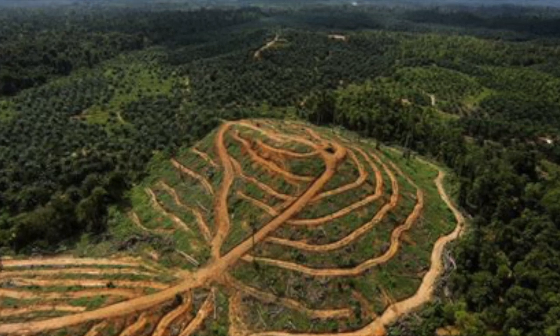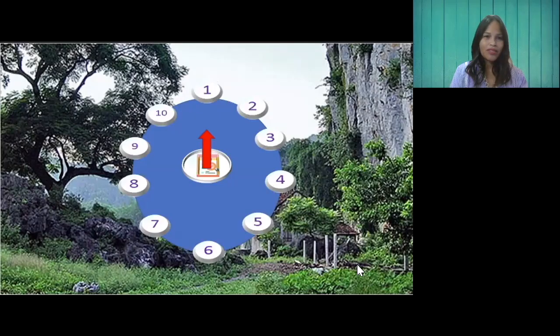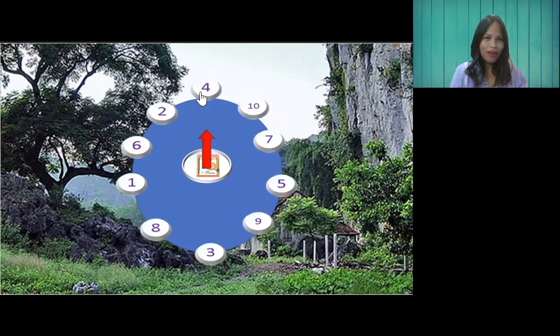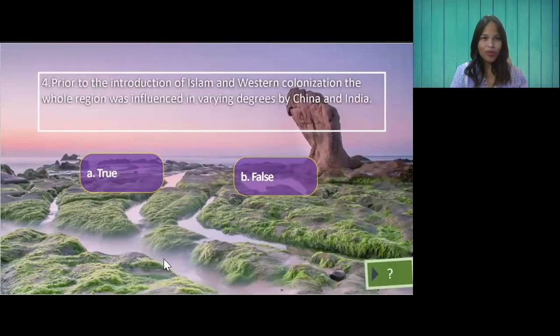All right, time for another quiz. I have prepared ten questions for this quiz, but since you have been such a great audience, I will reduce it to only five to make it easier for you. Let's start! So let's spin for question number one — it stops to number four, so let's check number four. The question is: Prior to the introduction of Islam and Western colonization, the whole region was influenced in varying degrees by China and India. A. True. B. False. The answer is letter A — True.